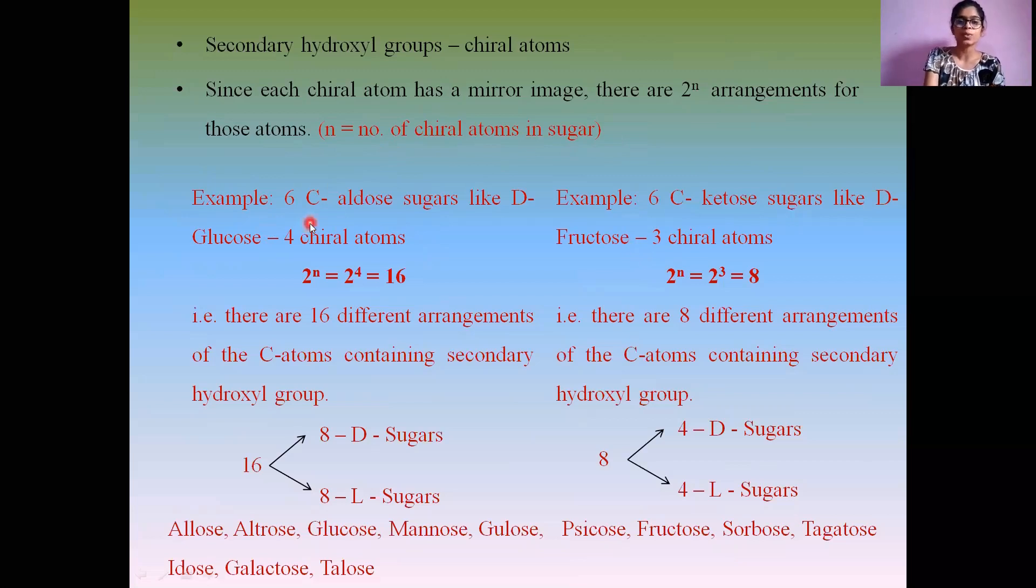Hexoaldosis have four chiral atoms, so 2^4 equals 16 different arrangements of these hexoaldosis sugars. In these 16, it will be divided as 8 D sugars and 8 L sugars.